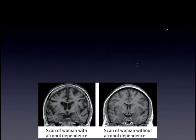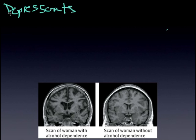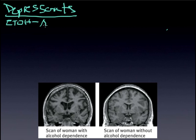Let's turn our attention, since we've gone through each of the terms, first to depressants. And obviously the first and major one of the depressants is alcohol. Ethyl alcohol is what it's referred to — the chemical name is ETOH. And you see below you a brain scan of a woman who has alcohol dependence versus a woman without it.